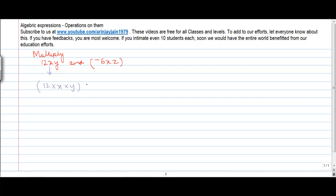Right? Multiplied by minus 6 into x into z. Right? So effectively, we have these three numbers here and another three numbers here. Now, in a multiplication, whenever you want to do this...